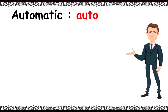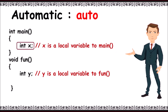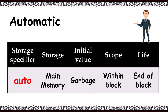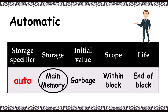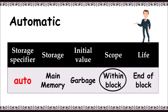Automatic: variables declared inside the block are automatic. In this example, X is local to the main block and Y is local to the fun block. This means you cannot access X in function fun, and Y is not accessible in the main function. For an automatic variable, the keyword is auto. Storage of the variable will be on main memory. Initial value is a garbage value. The scope and visibility of the variable is within the block, and the lifetime is up to the end of the block.